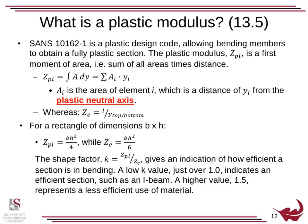Now, we've been talking about a plastic modulus, and you will have covered this earlier in your degree, but I generally find most people have forgotten this by this stage. So SANS-10162 is a plastic design code allowing members to obtain a fully plastic section. The plastic modulus, ZPL, is a first moment of area, sum of all areas times distance. So you can work out your ZPL simply by multiplying areas times the distance to its centroid, where y is the distance from the plastic neutral axis. So where ZE, your elastic section, is your I over y of your top and bottom. And you can have two different ZEs, you can have a ZE top and a ZE bottom, and the lower one will govern your resistance. ZPL, there's only one value.